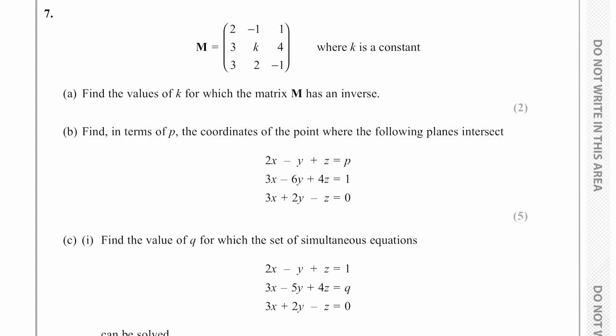Okay, so for this question we have this matrix M and we've been asked to find the values of k for which the matrix has an inverse. So if it has an inverse it means its determinant is not equal to zero.